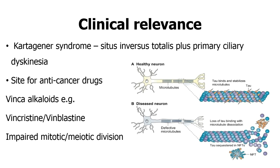Pharmacologically, microtubules are an important site for anti-cancer drugs. The drugs that target the microtubule system are the vinca alkaloids — vincristine and vinblastine. By impairing polymerization or causing depolymerization of microtubules, these drugs impair cell division and ultimately cause cancer cell death by preventing growth of that cell population. Thank you — if you have any questions, please leave them in the comment section below.